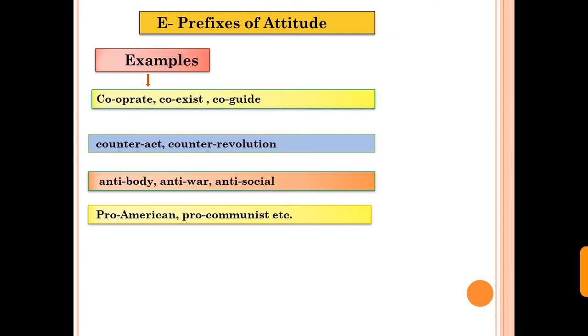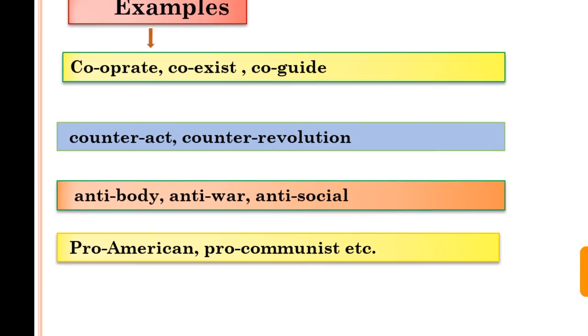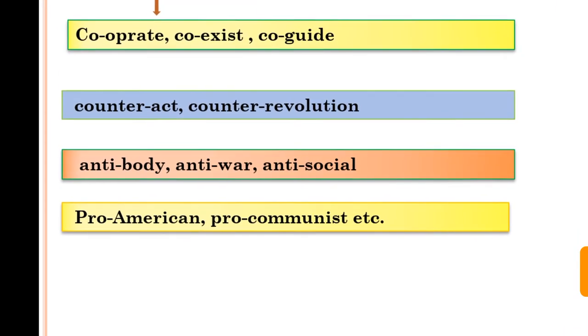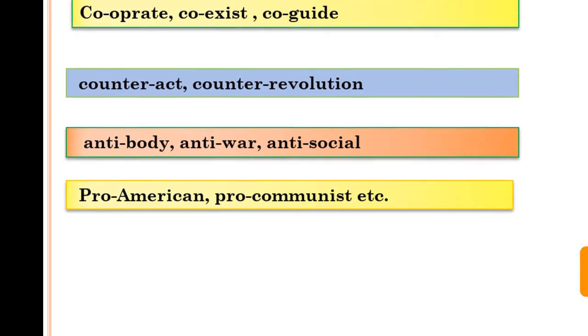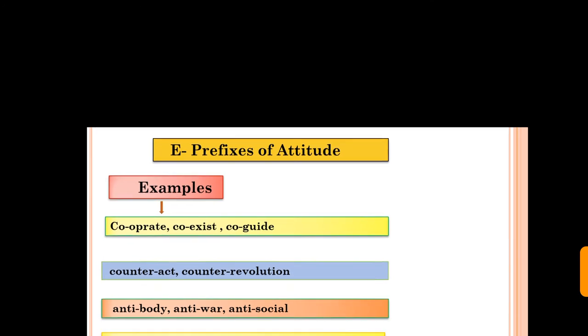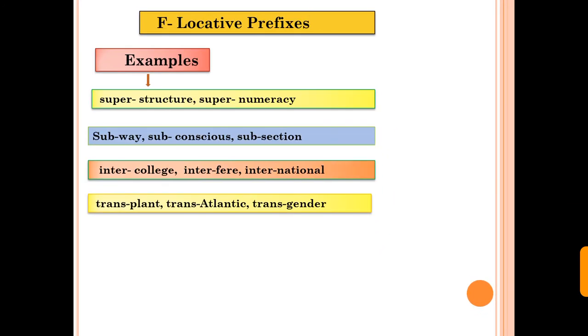Next type is prefixes of attitude. These are co, counter, anti, and pro. Operate, cooperate, act, counteract, body, antibody, American, pro-American. These are the examples of prefixes of attitude.